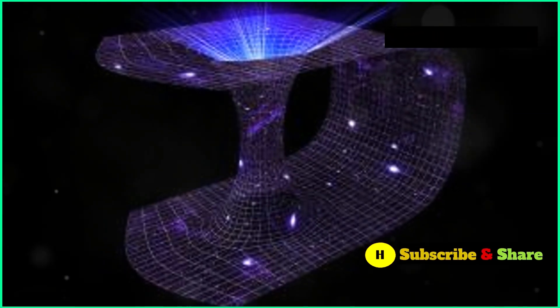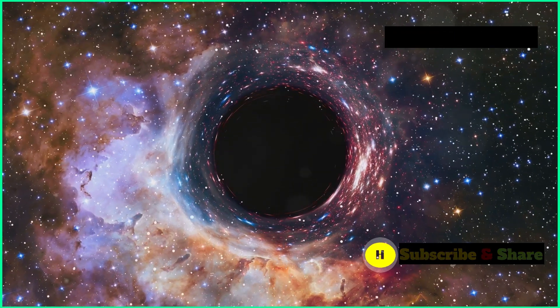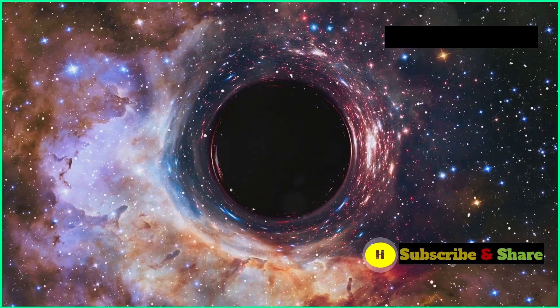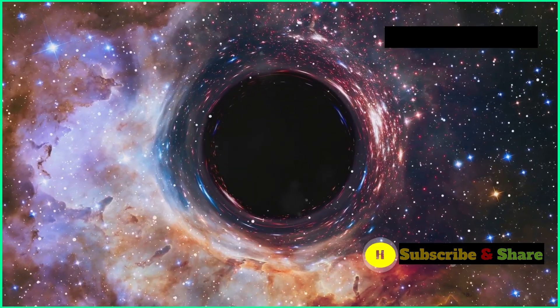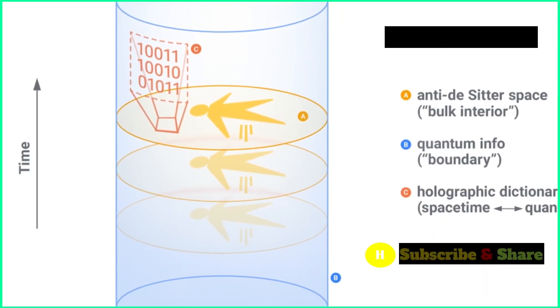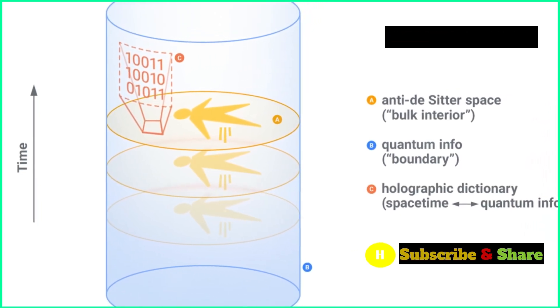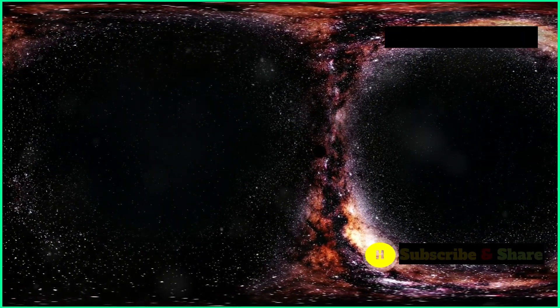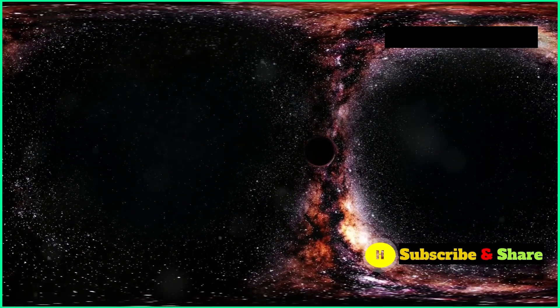This remarkable idea stems from the observation that the information content of a black hole, a region of space-time where gravity is so strong that nothing, not even light, can escape, is proportional not to its volume but to its surface area. Applying this concept to the entire universe, some physicists believe that our three-dimensional reality could be a holographic projection of information encoded on a distant two-dimensional surface, much like the cosmic horizon of the observable universe.